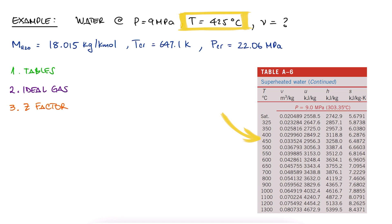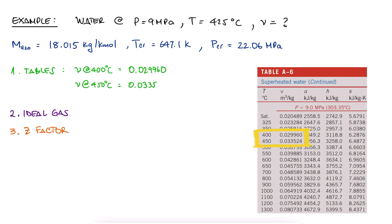Here, for a temperature of 425°C and a pressure of 9 MPa, we'd have to interpolate between 400 and 450. Of course, since how we interpolate is linearly, the specific volume would be exactly the midpoint of these two values, at 0.031742 m³ per kg.